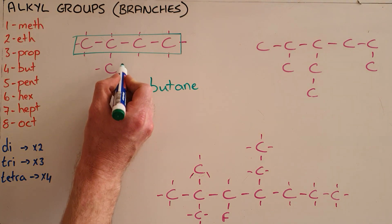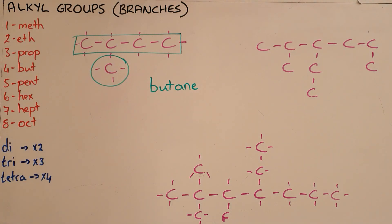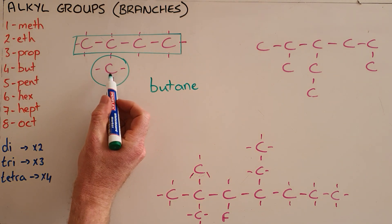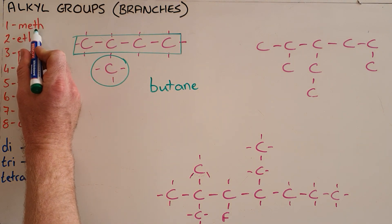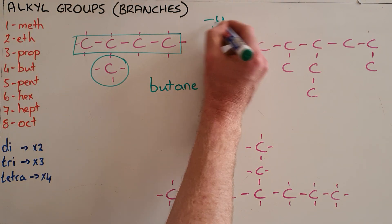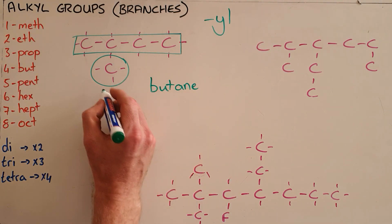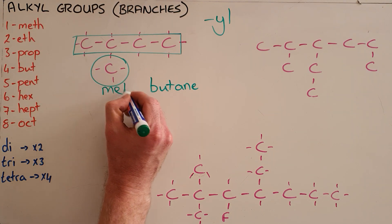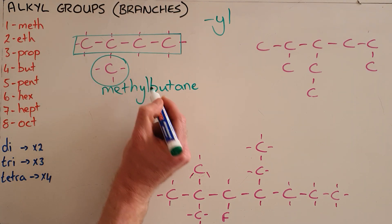And now what we can see is that there is a single carbon that is attached to that main chain. And so that single carbon gets the same prefix that a single carbon chain would get. But now because it is a branch it gets the suffix y-l. So this would then be called methyl butane. And that is all one word.